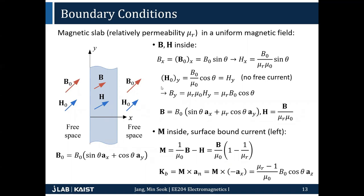The Y component is the surface tangential component. Because there is no externally applied current, the surface tangential component of H must be continuous. So H_y should be preserved: H_y outside the material was B0 cosine theta / mu_0, and this equals H_y inside. Then B_y inside can be obtained by multiplying mu to H_y, giving mu_R * B0 * cosine theta. So in summary, B inside = B0 sine theta (x-hat) + mu_R * B0 cosine theta (y-hat).